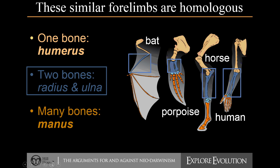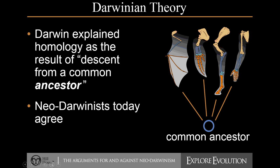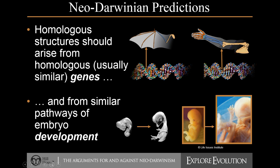The argument is that the reason for this similar bone pattern is that they share a common ancestor. According to Darwinian theory, Darwin explained this similarity in bone structure as a result of descending from a common ancestor, and that's also held by neo-Darwinists today. But just because something has a similar structure, the implication that they also share the similar genetics that produce that structure and the similar developmental pathways — that's the question. If something is a result of common ancestry, you would expect it to be produced by similar genes and similar developmental pathways.